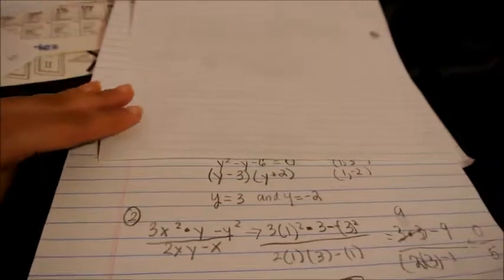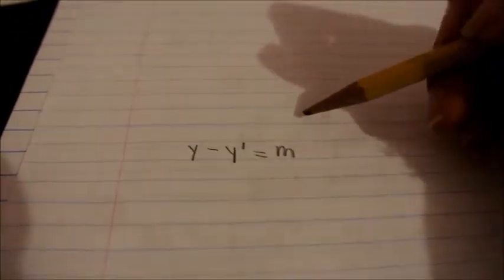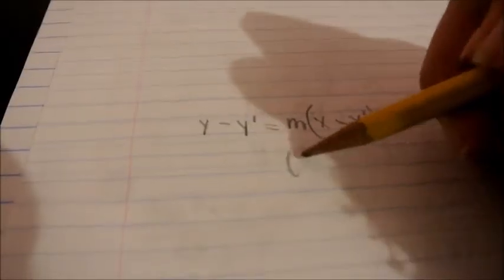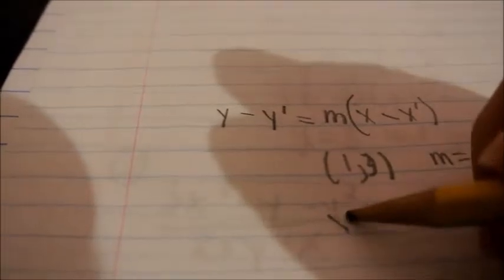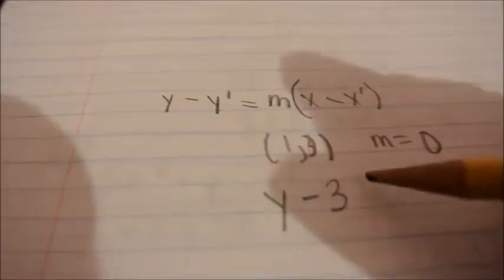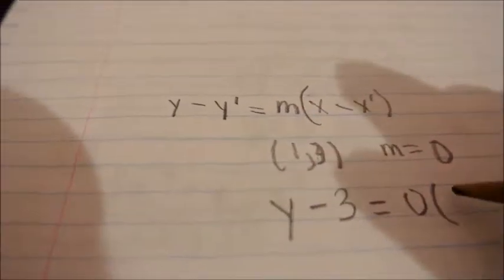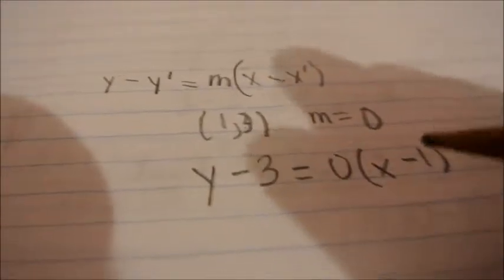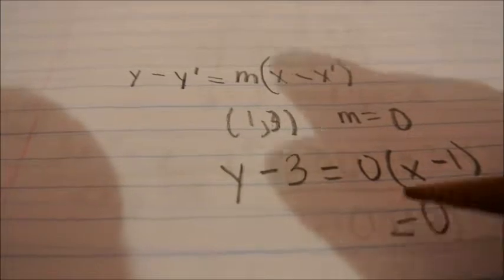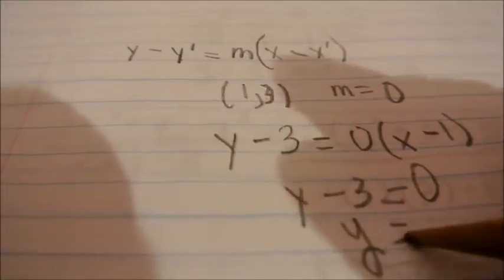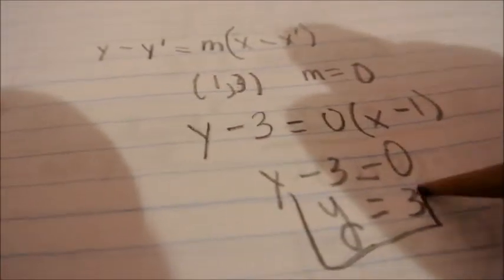So now we're going to put it into point-slope form, which is y minus y1 equals m times x minus x1. Now we have our point, we have our slope, m is slope, which is 0, which we got from plugging 1 comma 3 into the derivative. So y minus 3 equals 0 times x minus 1. 0 times this is 0. So y equals 3 is the equation of the line.